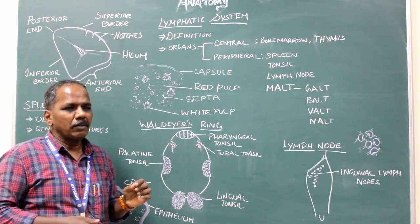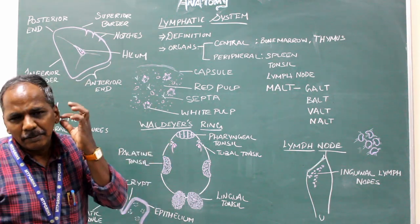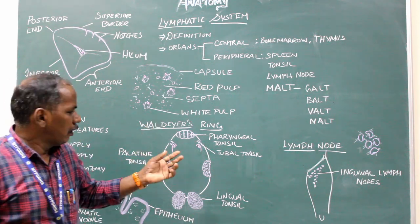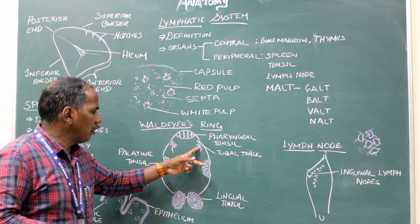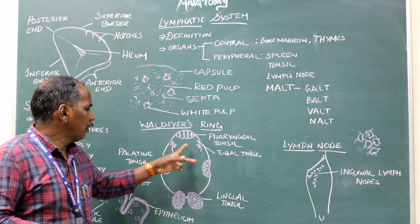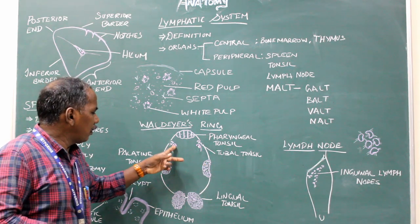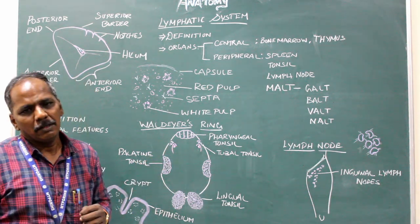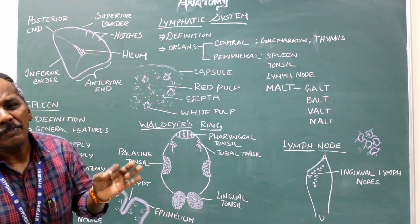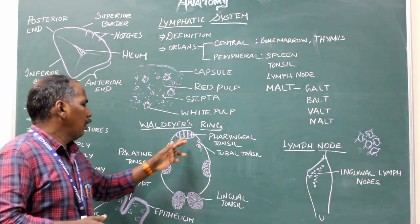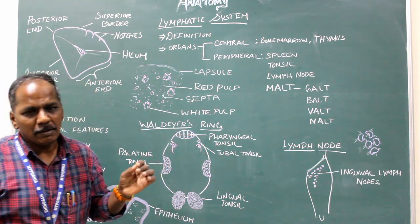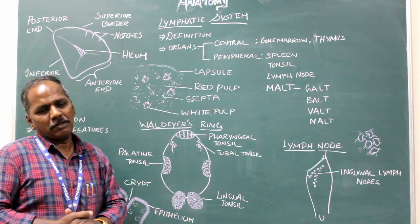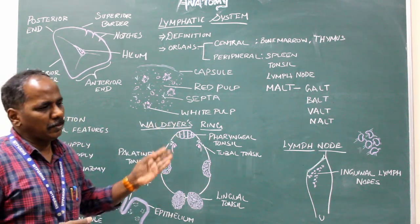The tubal tonsil is present near the tubular opening of the auditory tube in the nasopharynx. The pharyngeal tonsil is a pair of tonsils present in the upper part of the nasopharynx. So those are all the tonsils.